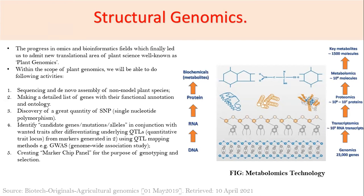How can plant genomics be used? First, we can sequence the genome of non-model plant species. There are model plant species like Arabidopsis thaliana and Rhys used for plant genomic studies, but many other species are harder to sequence. Plant genomics can study such species, list upregulated or downregulated genes, and find single nucleotide polymorphisms or mutations that could be corrected and used for drug resistance or environmental resistance.